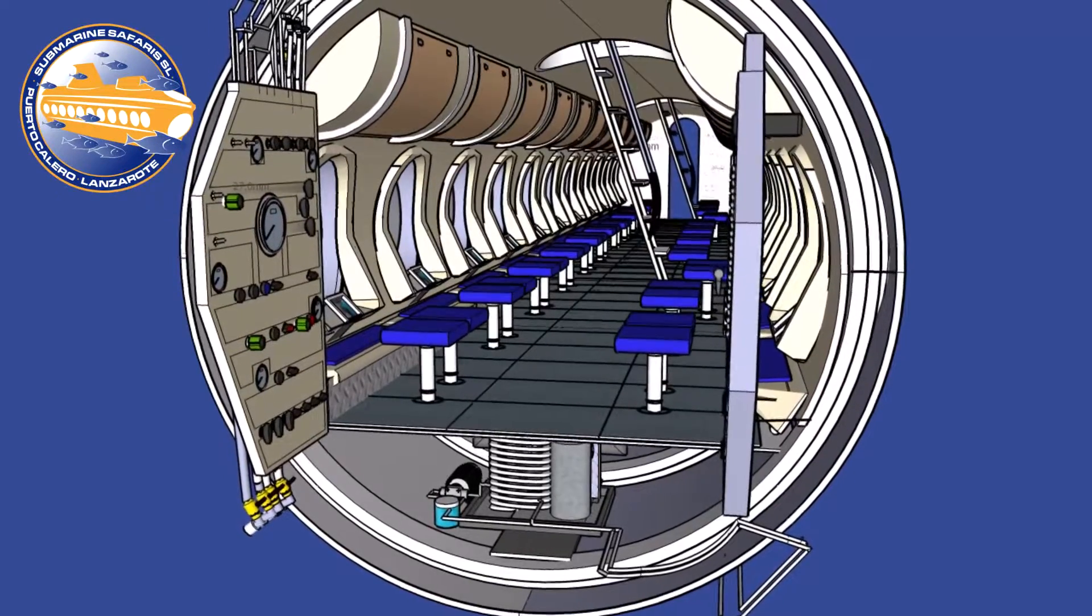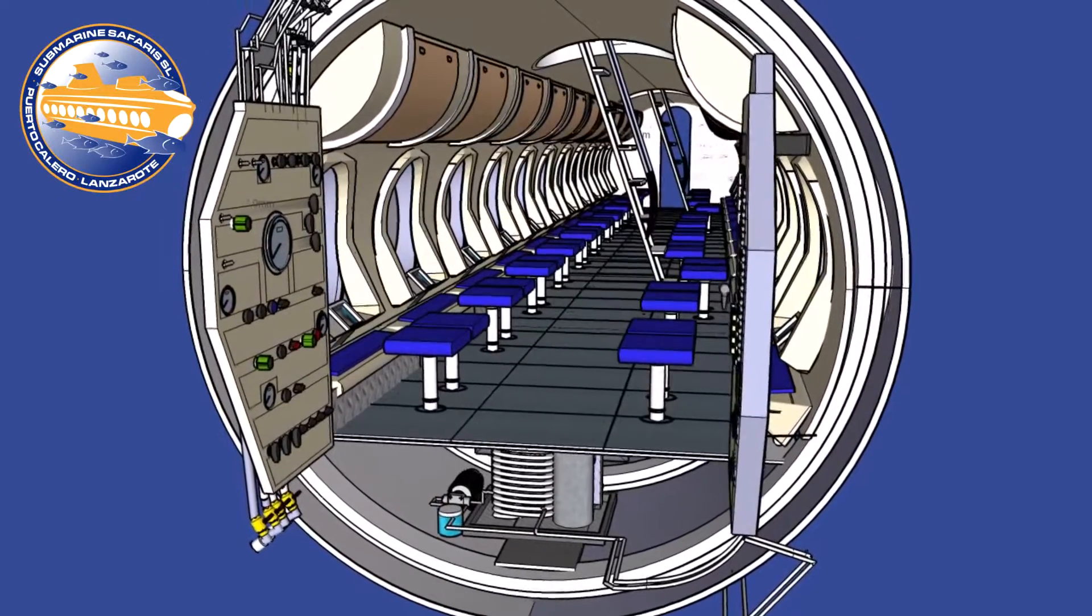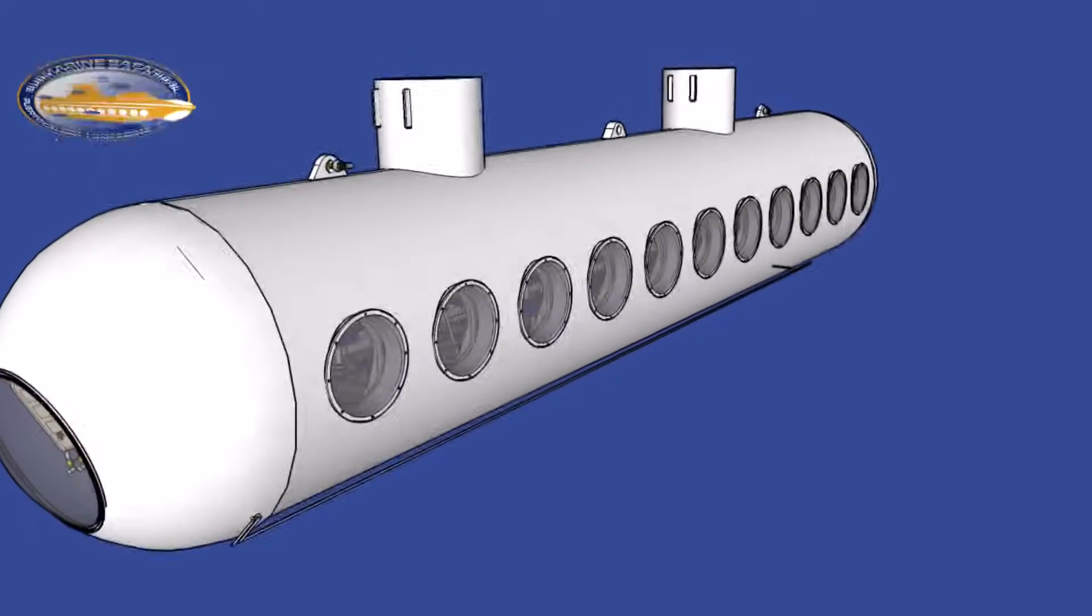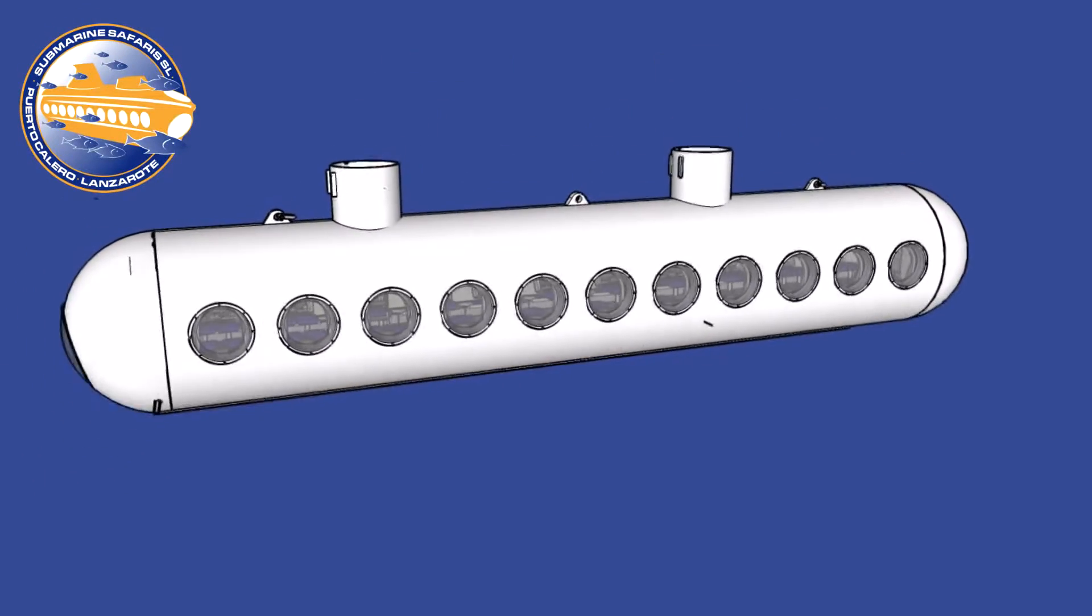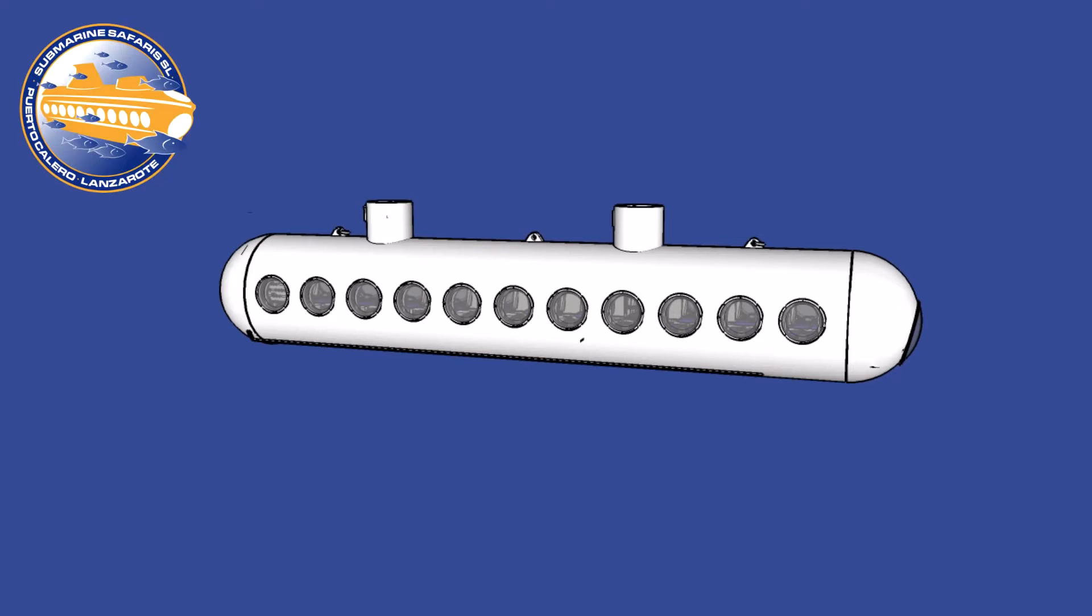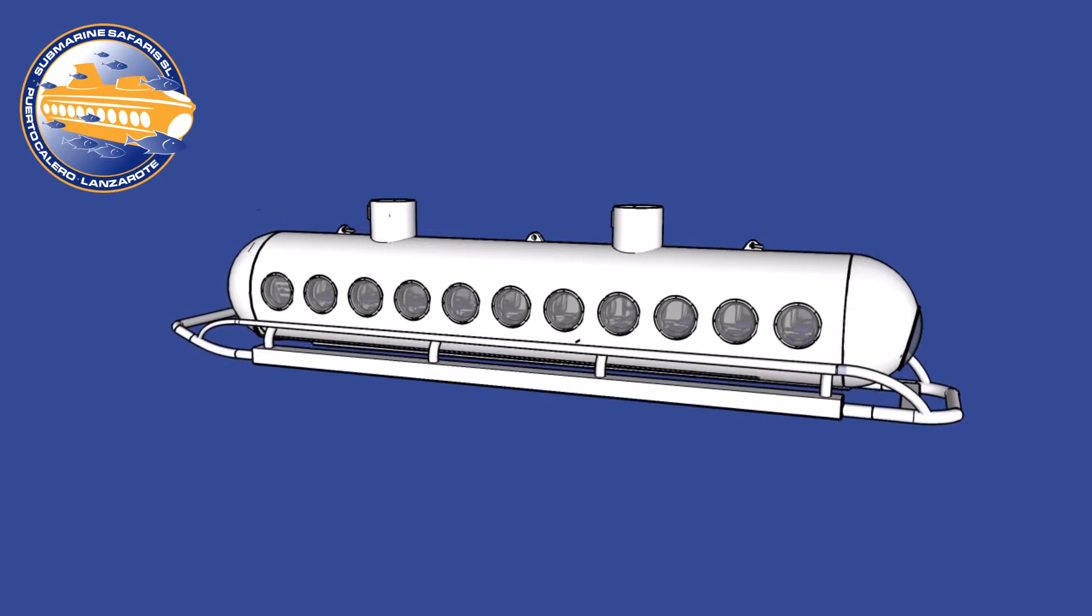There are 11 windows down each side of the submarine. Each window is 798 millimeters in diameter and is 120 millimeters thick. They are made to measure from acrylic. Larger viewports are located at the front and rear, each measuring 127 centimeters.